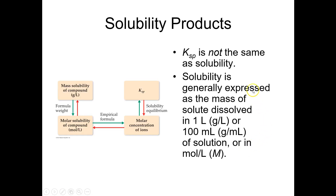KSP is not the same as solubility. KSP is an equilibrium constant. Solubility is expressed either in terms of molarity — moles of compound that dissolve per liter of solution — or as grams per liter. We can use KSP to determine the molar solubility, and then multiply by the molar mass to get the grams-per-liter solubility.